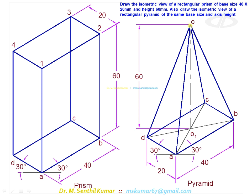After obtaining O, join O with all four base corner points. Now, in the case of isometric, you have to darken and show only the visible edges. Don't use the dashed line type.